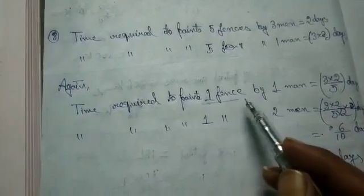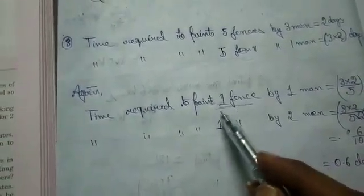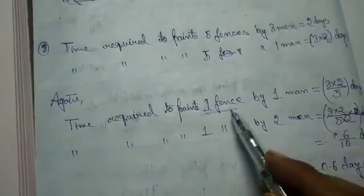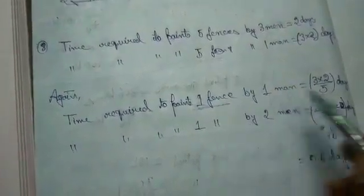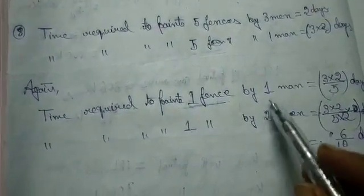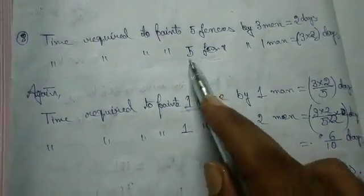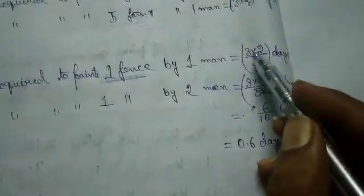If the number of fences is less, obviously the time will also be less. If instead of five fences a person has to paint only one fence, it will take less time. That is why it is (3×2) divided by 5.